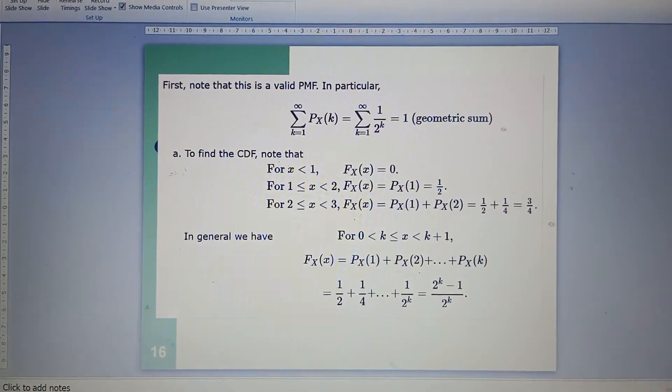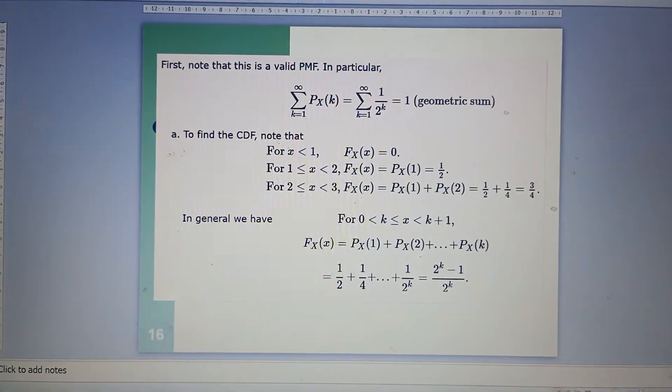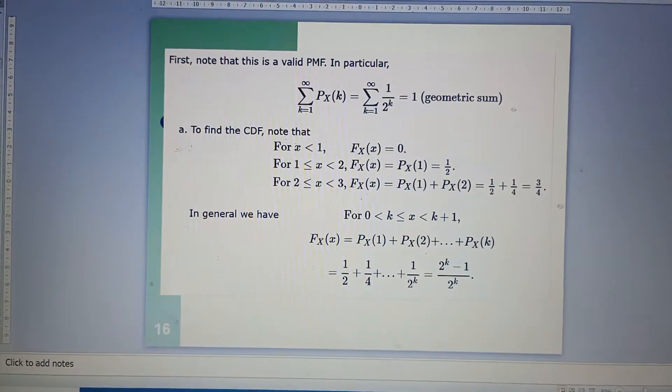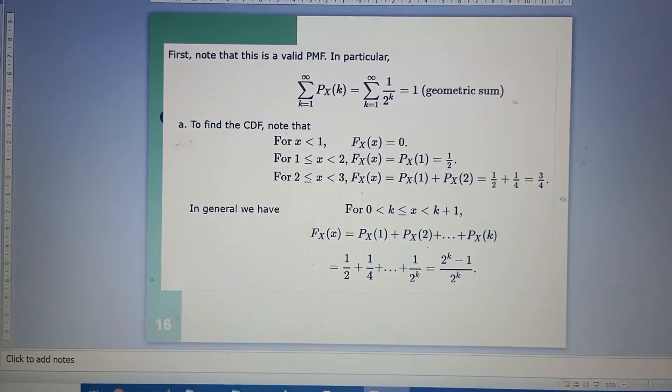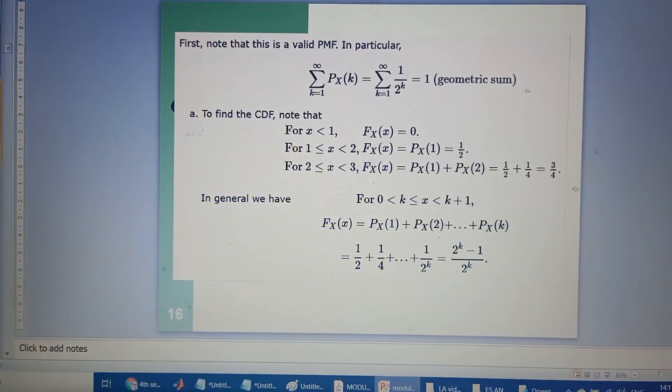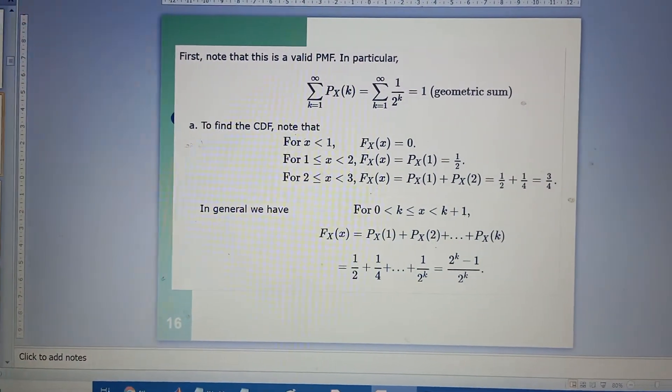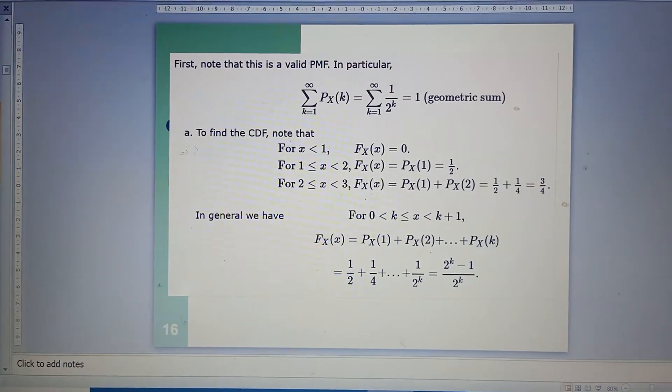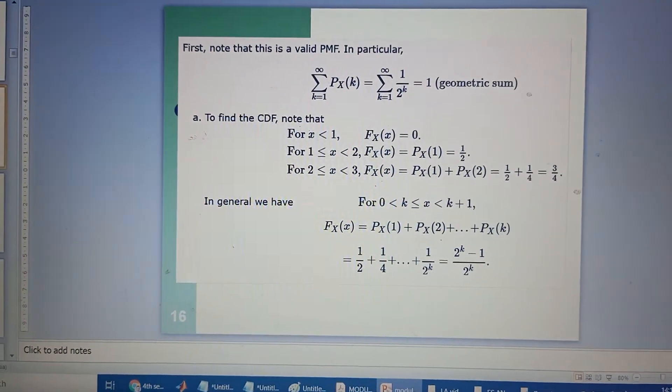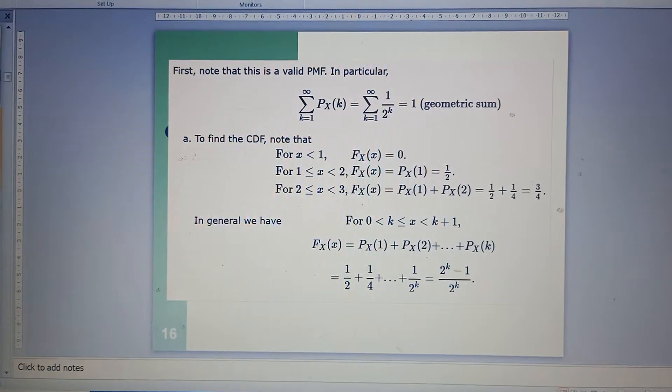Now to find the cumulative distribution function: for x being less than 1, we will have F_X(x) equal to 0. For x being between 1 and 2, we will have 1 over 2, which is P_X(1).